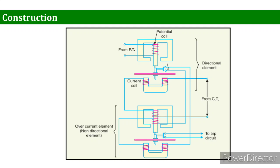Looking at construction, this is an induction type directional overcurrent relay. A typical induction type directional overcurrent relay basically consists of two relay elements — one is the directional element and the other is the non-directional element, also called the overcurrent unit. There are potential coils for the directional element and on the bottom an overcurrent element. These two elements combined form the directional overcurrent relay.